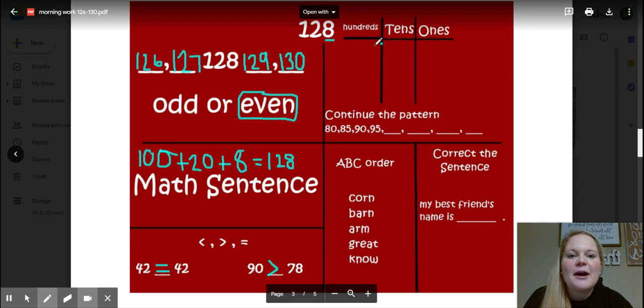Okay, how many hundreds do we have? One. How many tens? Two. And how many ones? Eight: one, two, three, four, five, six, seven, eight. All right, here's a new addition to our morning work—it's patterns.